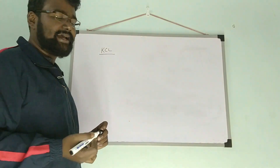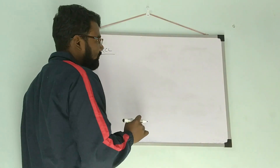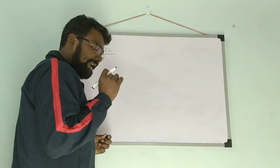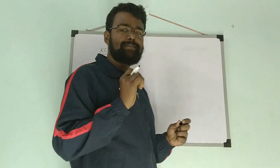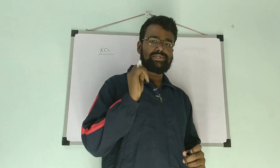KCL states that in a particular node, the algebraic sum of all the currents is equal to zero.